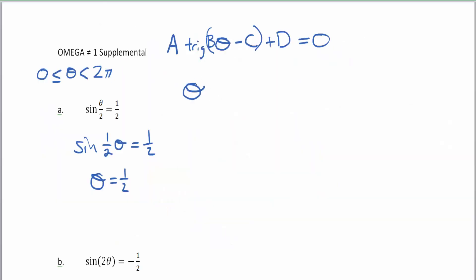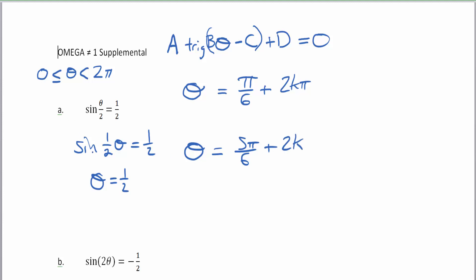So theta equals π/6 plus 2kπ, which means that every periodic repetition of π/6 — in 360 degrees — it'll equal one-half again. Also at 5π/6. Here I'm writing my general equations for when the sine of theta equals one-half. But note that in my problem, theta isn't just theta — it's theta divided by two. So I'm going to divide everything here by two.